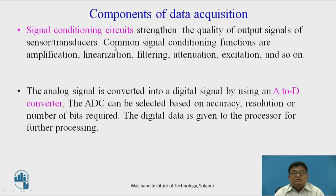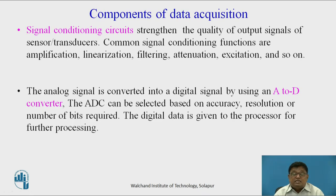The signal conditioning circuit is used to increase the strength and quality of the output signals from the sensor or transducer. For example, the output of some sensors may be in millivolts, so it needs to be amplified for further processing. Or the output may be a change in resistance, which needs to be converted into voltage. Signal conditioning circuit functions include amplification, linearization, filtering, attenuation, and excitation.